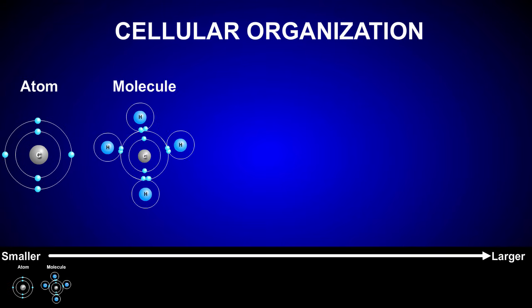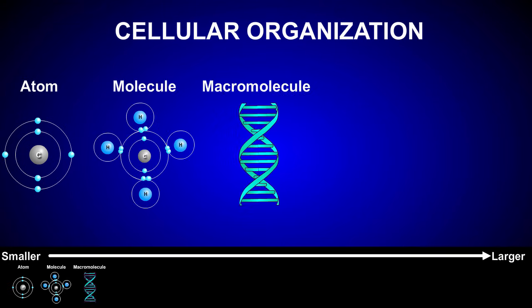Cellular organization begins with the atom, which is the basic unit of matter. Atoms combine with other atoms to form molecules, which in turn can combine to form macromolecules, like the DNA shown here, which is used to store hereditary information.